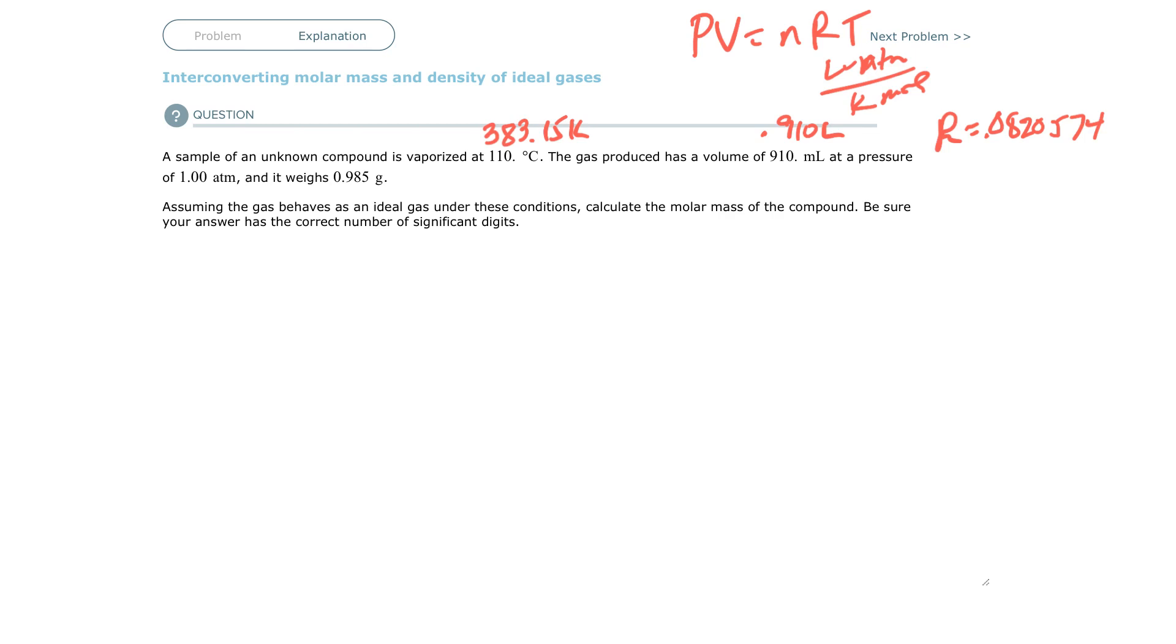We are asked to find the molar mass, and if you remember, molar mass from the periodic table is grams per mole. So we want grams, which are given, and we're going to divide by moles, which we're going to solve for. We have pressure, so let's fill it in. Pressure is one atmosphere. Volume is 0.910 liters. We're going to solve for n, so RT has to be on the bottom.